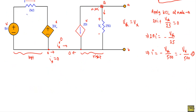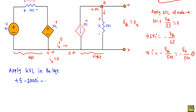Now look at the left portion. The current will be flowing in this direction, so this side will be positive and this side will be negative for the 2 kΩ resistor. If I apply KVL in the left portion, I will get: plus 5 minus 2000I minus 3VX equals zero. Here, I is equal to minus VX over 500.